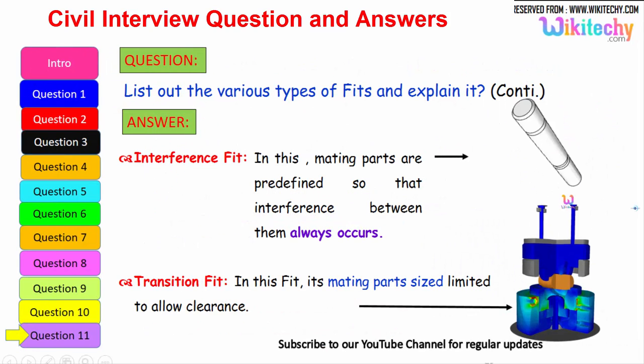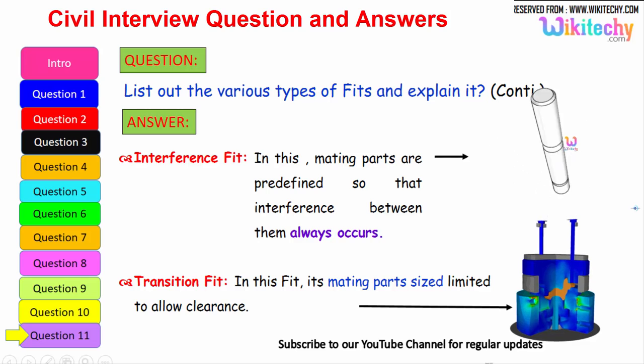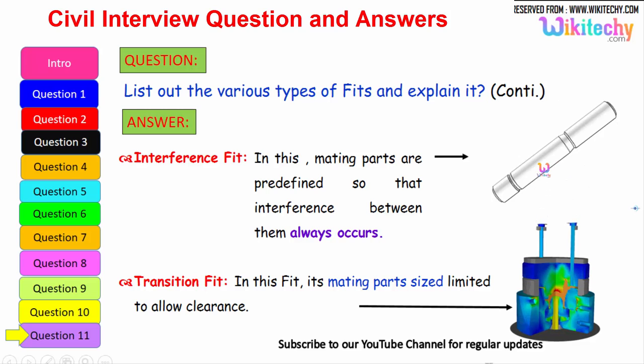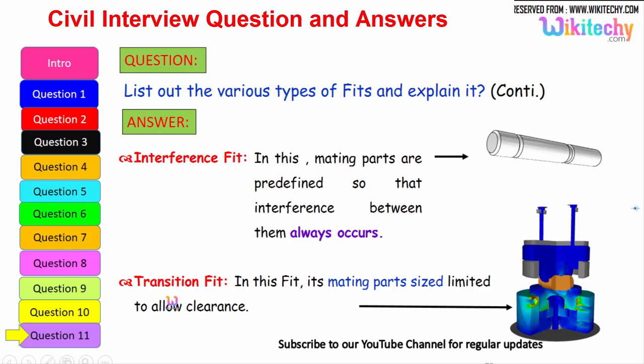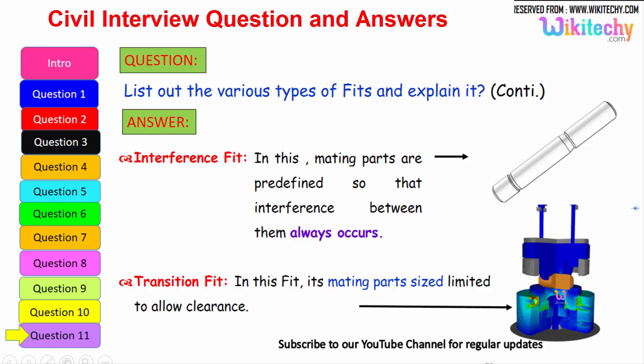If you talk about the interference fit, so here is the one which is connected to the other one. In this the mating parts are predefined so that interference between them always occurs. The final one is transition fit. In this fit, the mating parts size limited to a low clearance. You should not have exact fitting. It may break. You can see the greenish one. That is your transition fit. That is it.